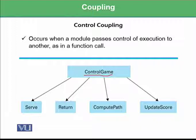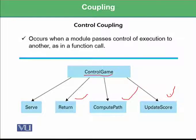Similarly, control game calls the return module, the compute path module, and the update score module. Whenever a module passes control of execution to another module, it is known as control coupling.